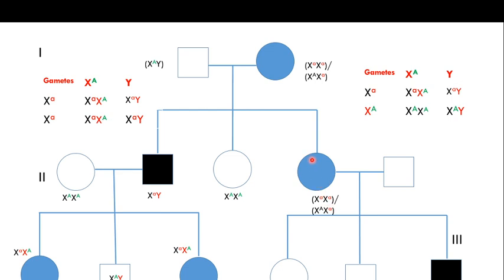When crossing the affected female (heterozygous) from generation two with a normal male, the offspring include an affected male, a normal male, and a normal female. The normal female has both X chromosomes carrying the normal allele. The normal son received the X chromosome with the normal allele from his mother; the affected son received the X chromosome with the abnormal allele from his mother.